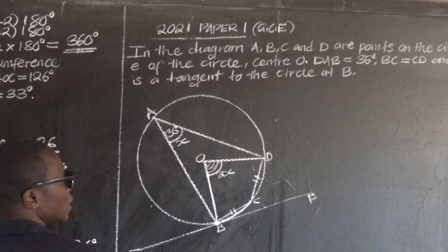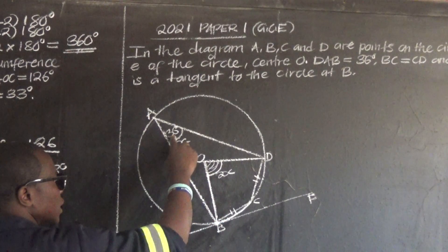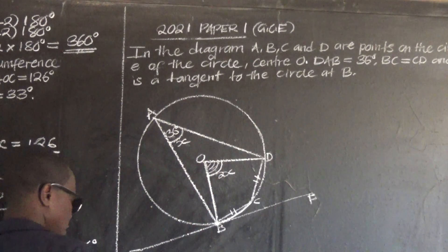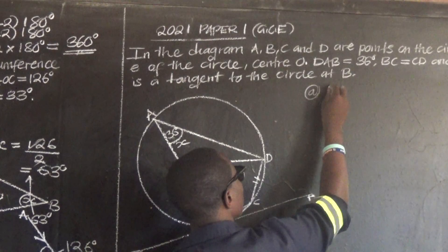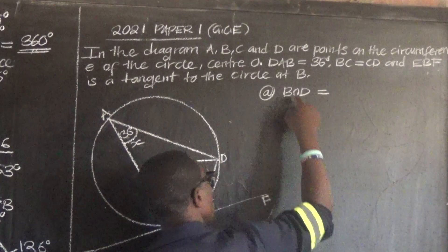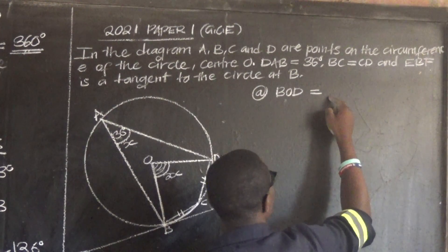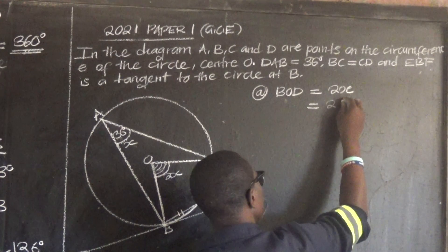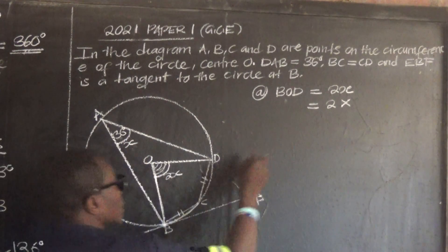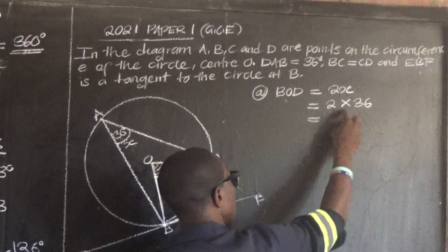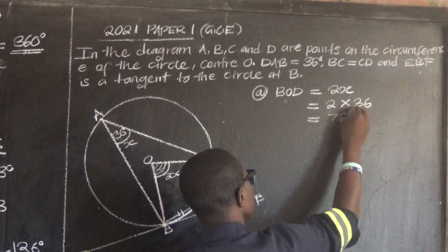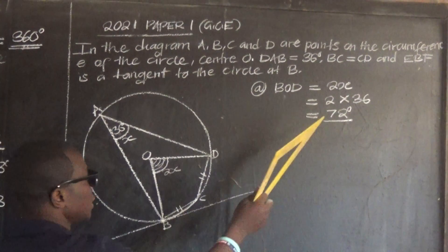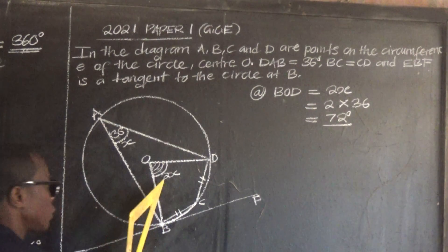Since we know that the circumference angle is 36, for us to find angle BOD, just say 2 times 36. So angle BOD is the angle at the center, which is twice the angle on the circumference. So BOD equals 2 times 36, which gives us 72 degrees.